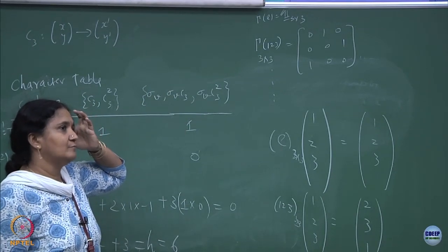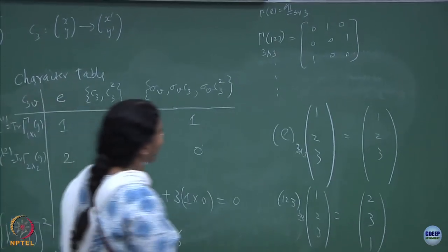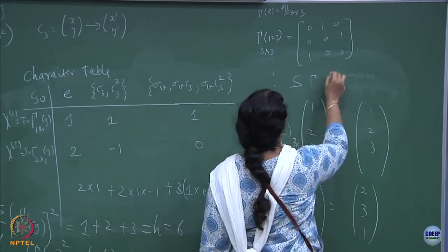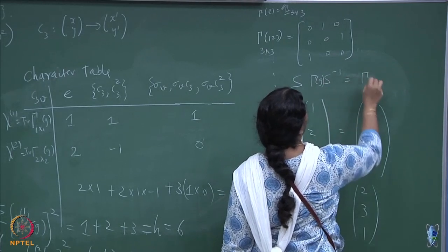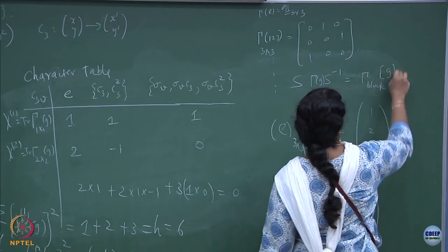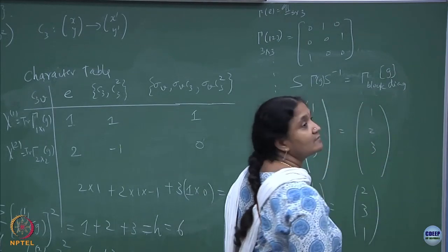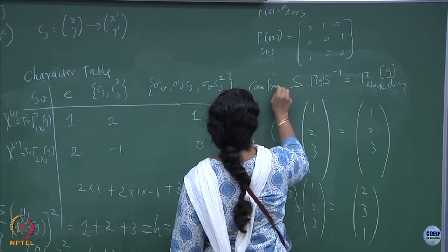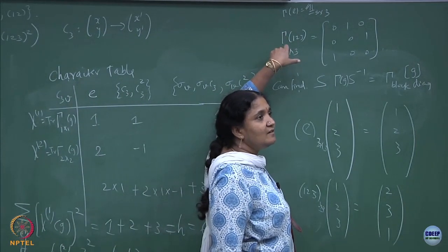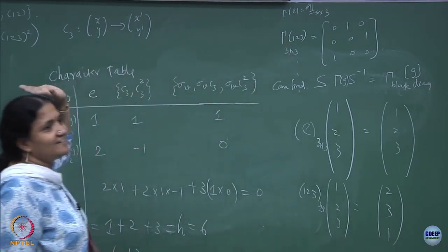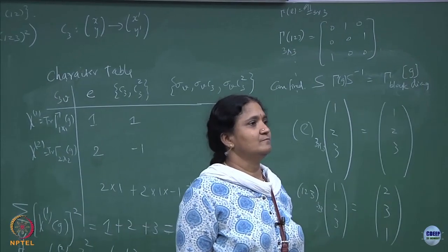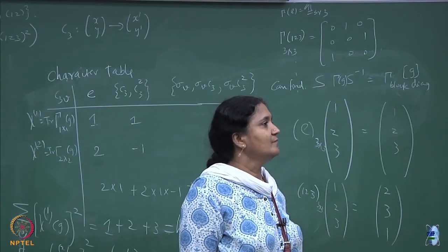The question is: is this reducible or not reducible? How will you figure this out? I am saying that you can find an S which will diagonalize this into some block diagonal form — I am not saying what it is, but you can find such an S. This set is a 3×3 representation for the symmetric group of 3 objects, which is isomorphic to C3v, but it is reducible.